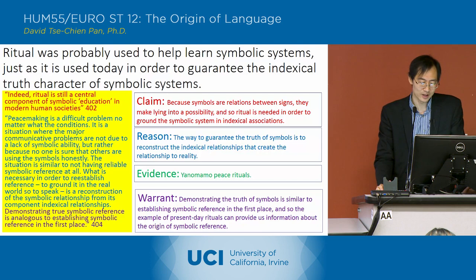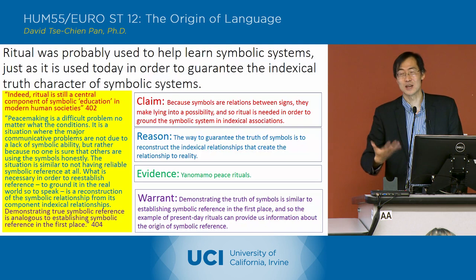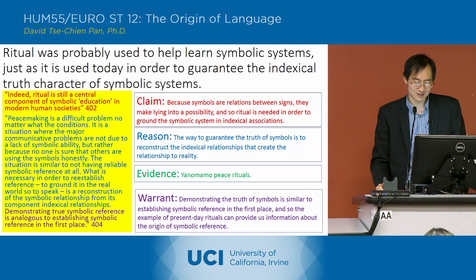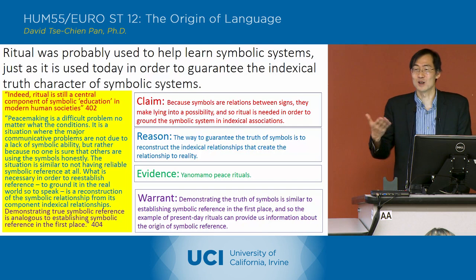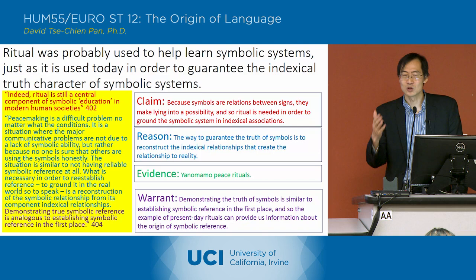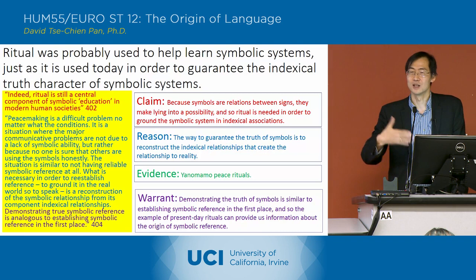He's saying that it has to be done through ritual. He doesn't paint a picture of what these rituals might have looked like amongst the Australopithecines, but he's imagining that there might have been some kind of ritual process that would have established these types of marriage bonds — they could have had some kind of marriage ritual that cemented these bonds and created or referred to those indexical bonds in order to ground the symbolic relationships.